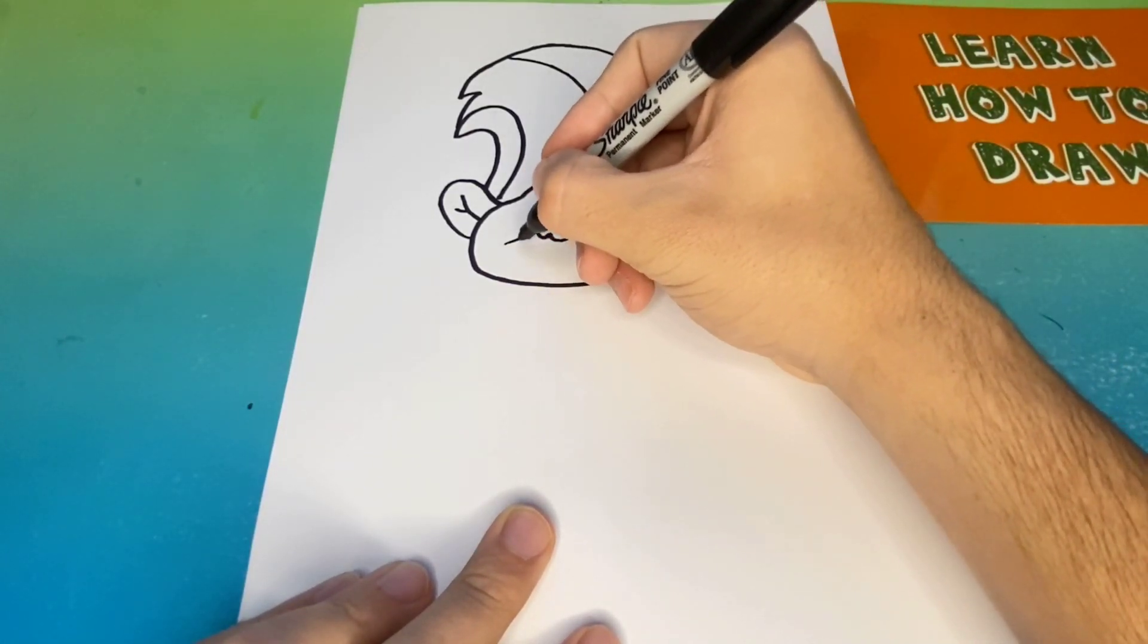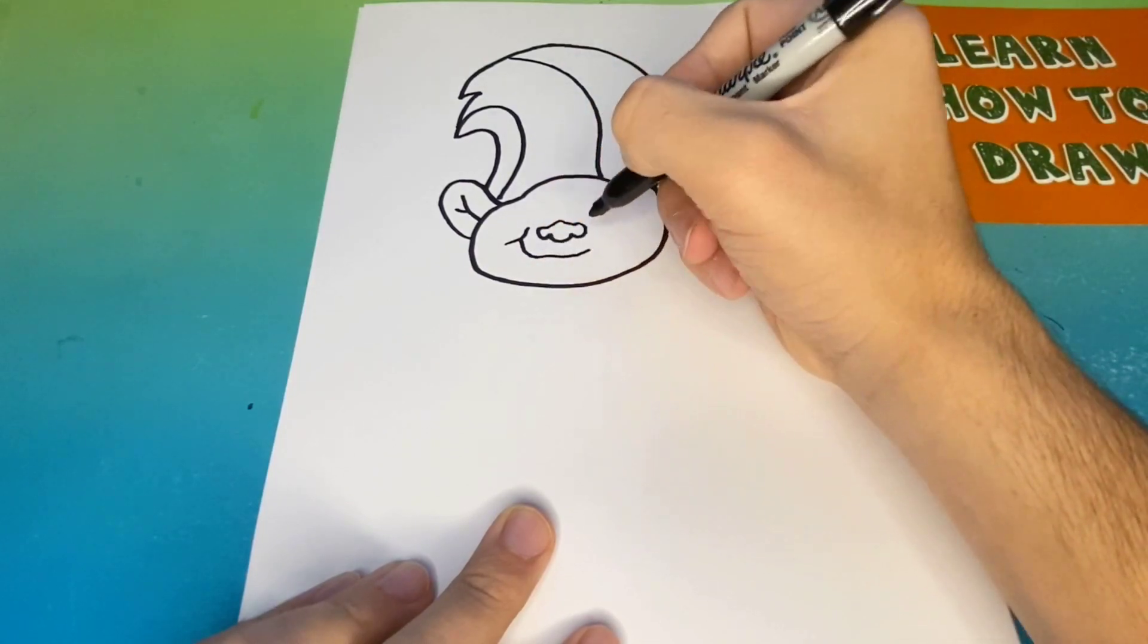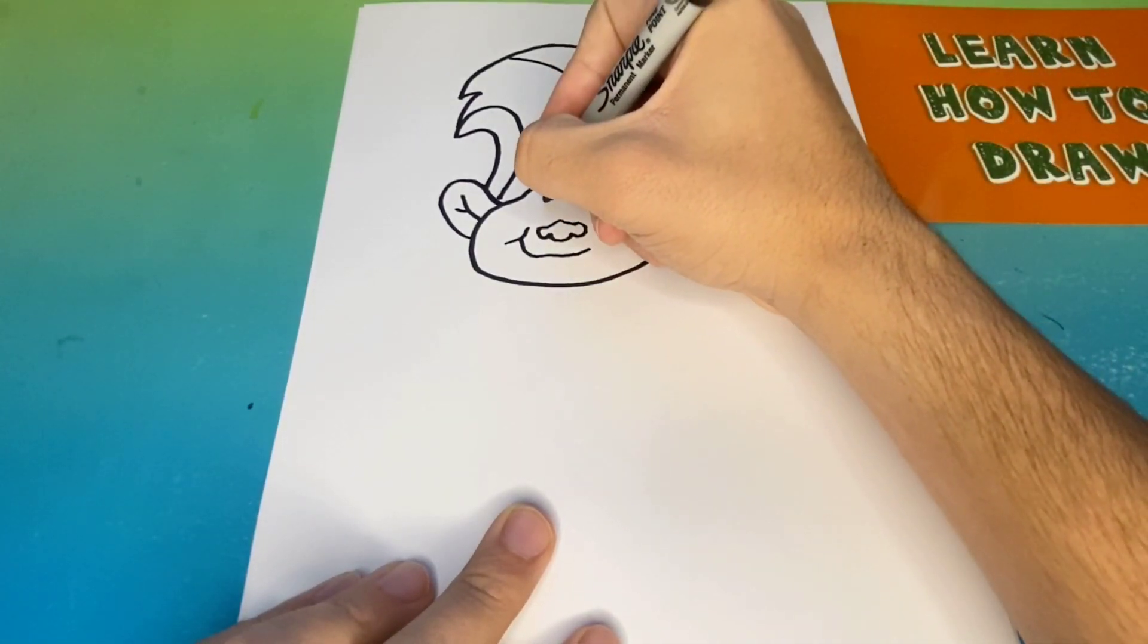Below the nose that we just made, we're going to go ahead and give Creek a nice smile. Then above the nose, we're going to make two circles. These will be Creek's eyes.